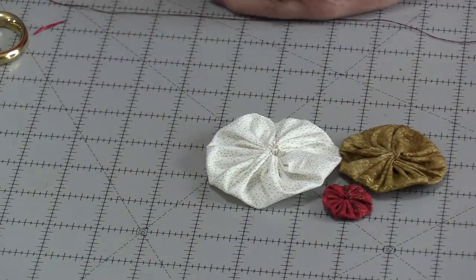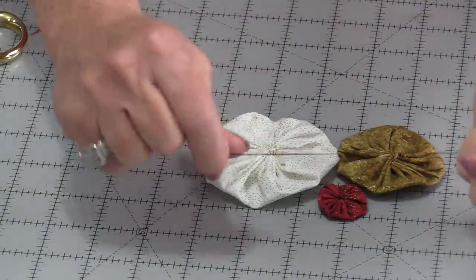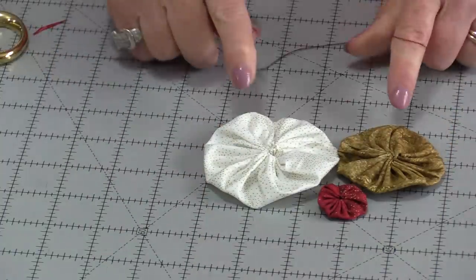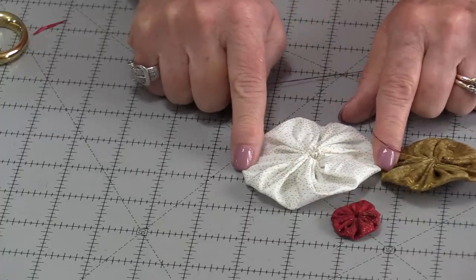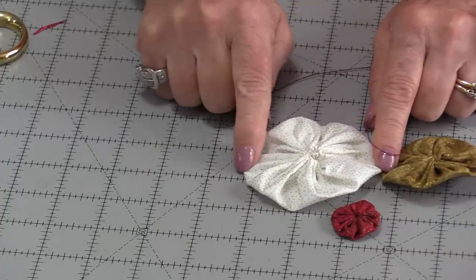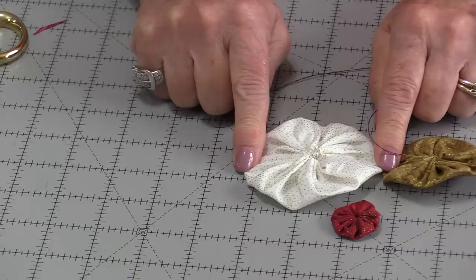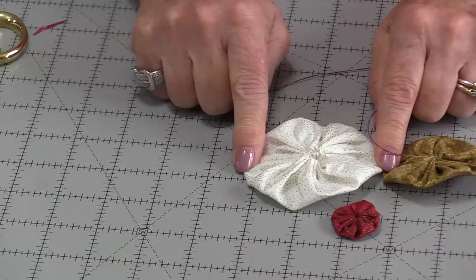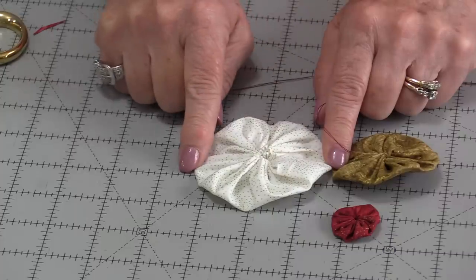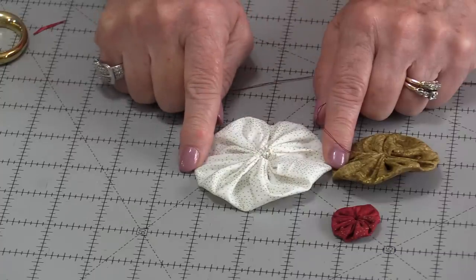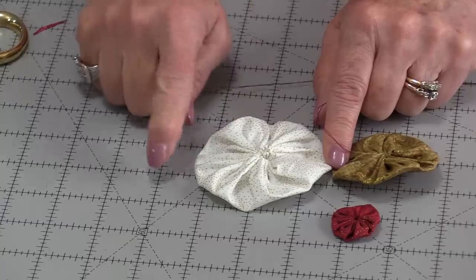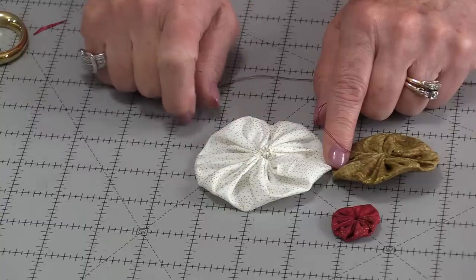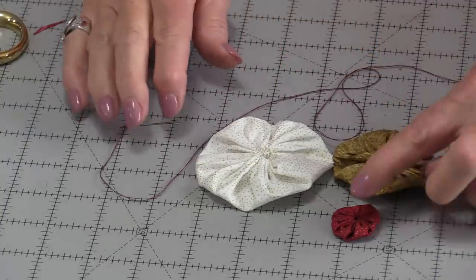This is all there is to making a yoyo. We need to have good strong thread and a circle. To know the measurement of the circle that we need to cut, we're going to take the finish size that we want and double it and then add a seam allowance. If I have a 3-inch finished yoyo, I'm going to start with a 6-inch circle and that ½-inch seam allowance. I'll need a 6½-inch circle. That's going to go for any size yoyo.